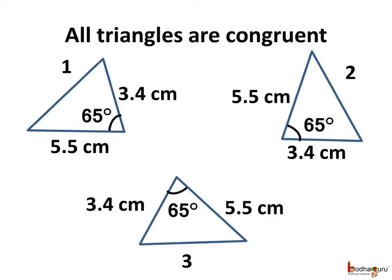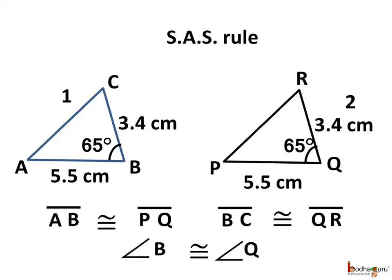It is a simple formula to check the congruency of triangles. In triangle ABC and triangle PQR, the magnitude of line segment AB equals the magnitude of line segment PQ, the magnitude of line segment BC equals the magnitude of line segment QR, and the magnitude of included angle B equals the magnitude of included angle Q. So if the two sides and the angle between them are the same in two triangles, they are congruent — that is, same in shape and size. To remember this rule, just remember SAS: Side, Angle, Side.